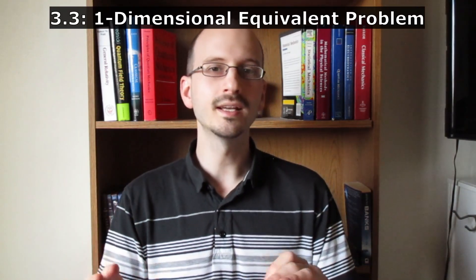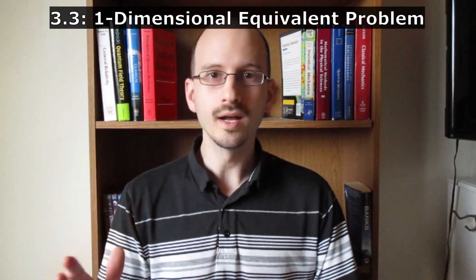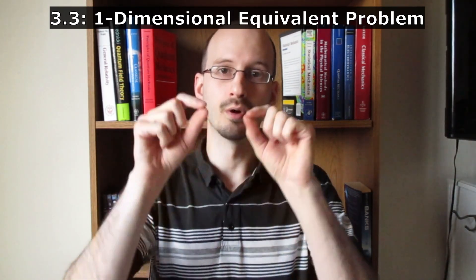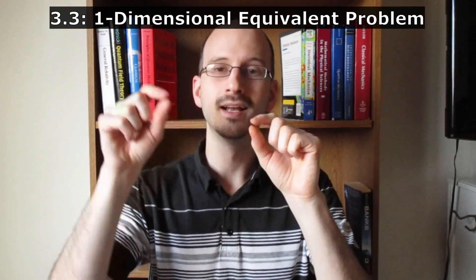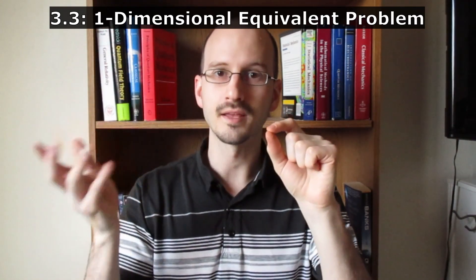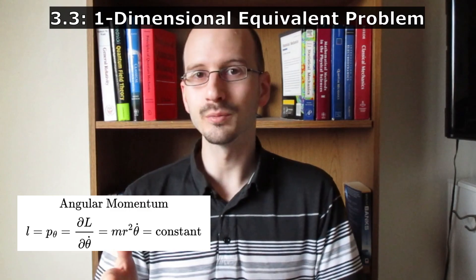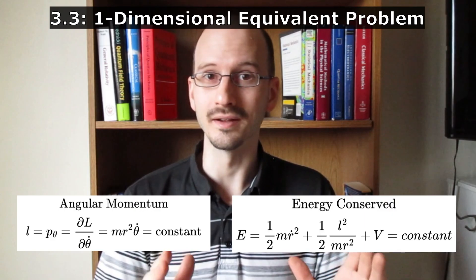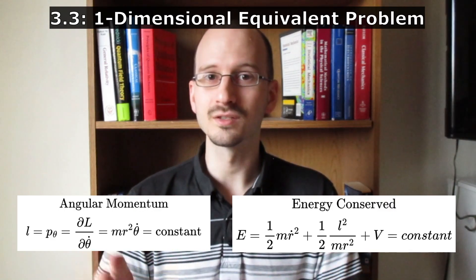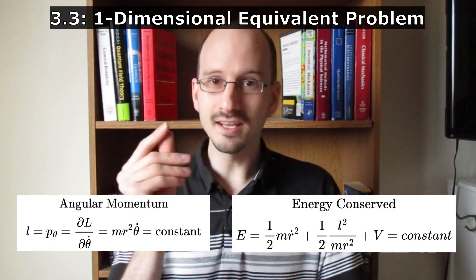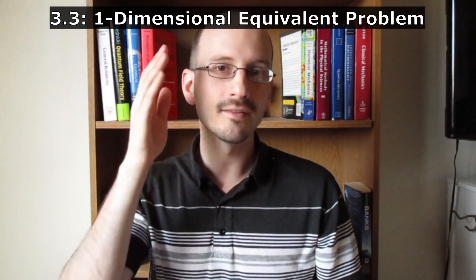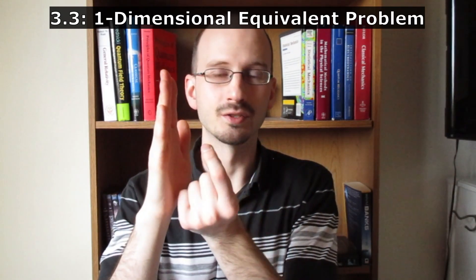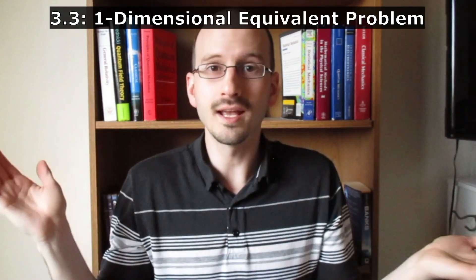Section 3.3 is the equivalent one-dimensional problem. So far in the video, we've talked about two-dimensional problems where we have the distance, r, and the angle of the orbit, theta. However, because angular momentum is conserved and we have this equation of motion that does not depend on theta, we can graph this, we can analyze it, as if it is a one-dimensional problem. We have the fixed source of the force and the object's absolute distance away from it. We can ignore the angle altogether.